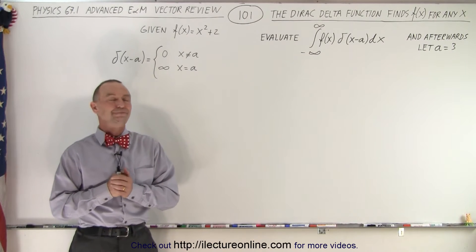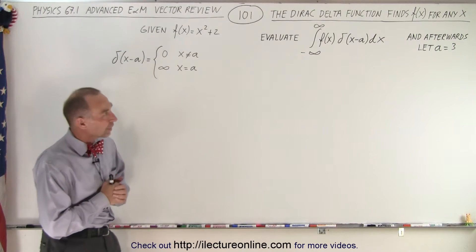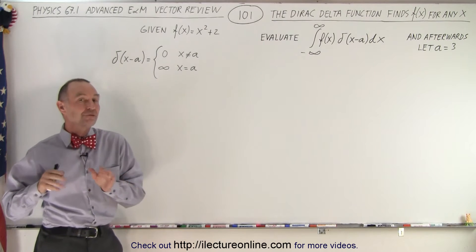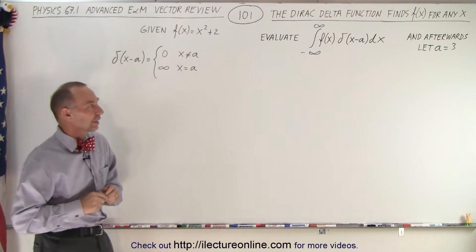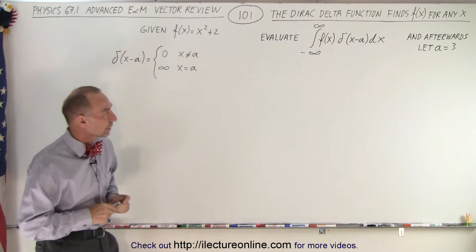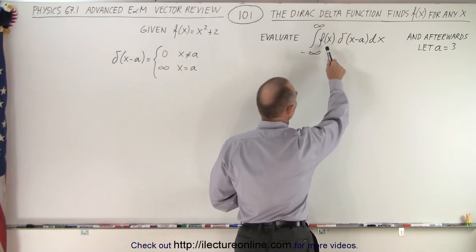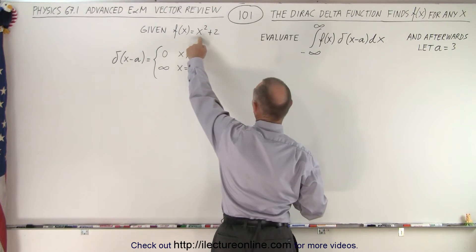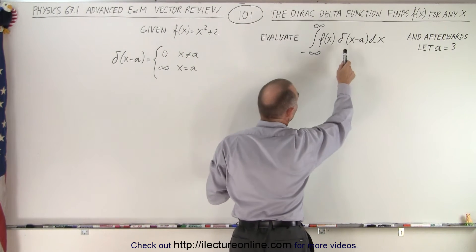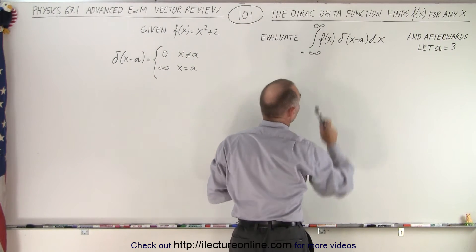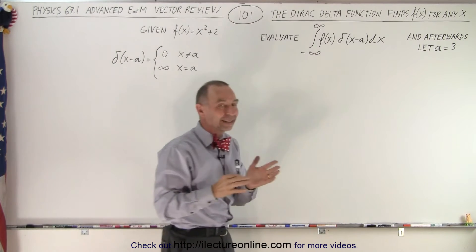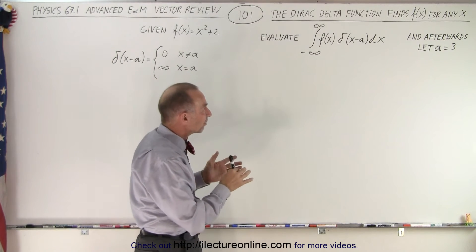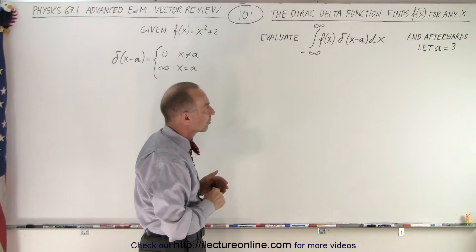Welcome to our lecture online. Here we're going to use a slightly different form of the Dirac delta function. We have the integral of some function, which we define as x squared plus 2, multiplied by the delta function — not delta of x, but delta of x minus a, dx.